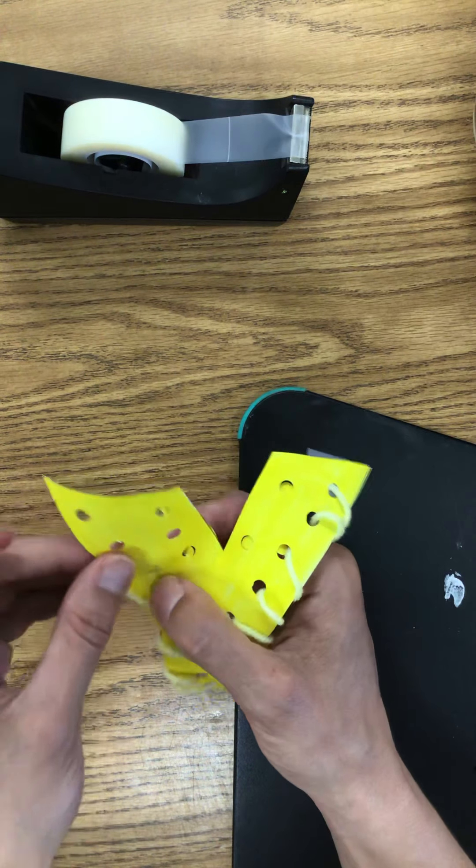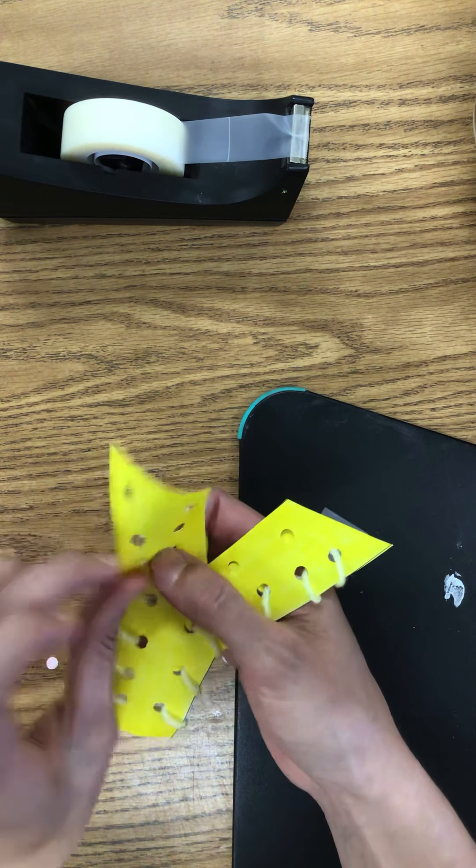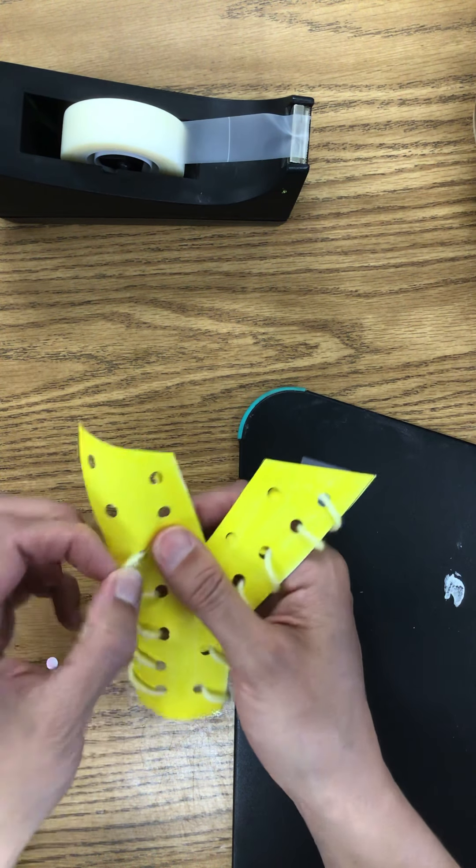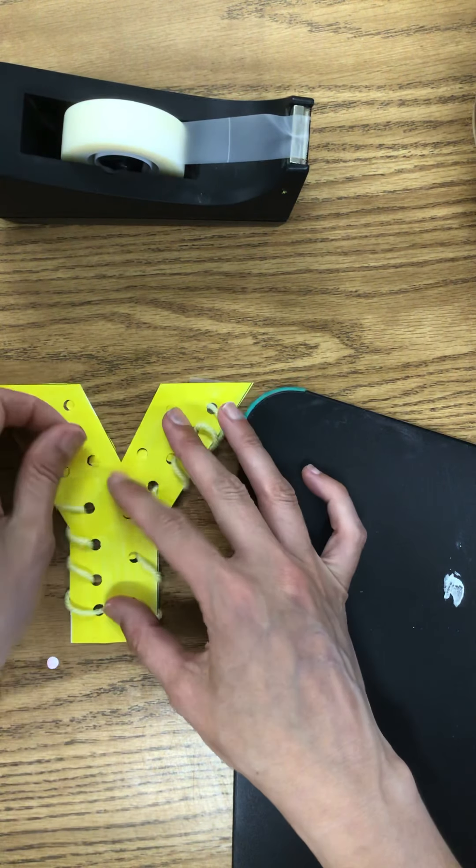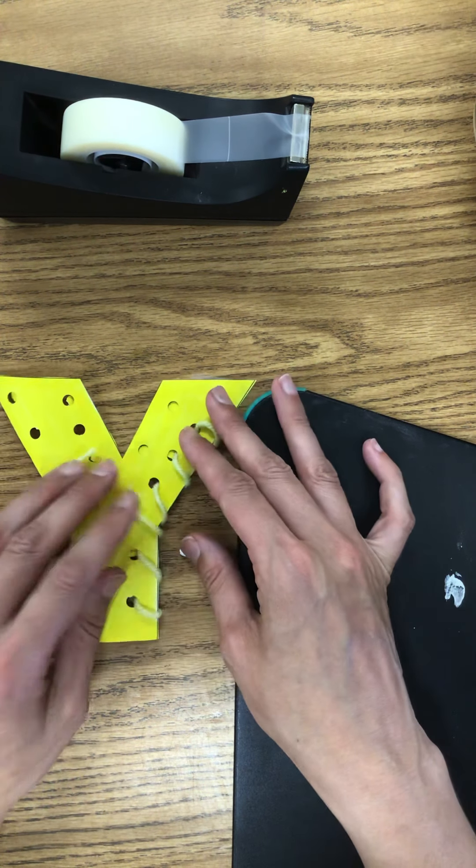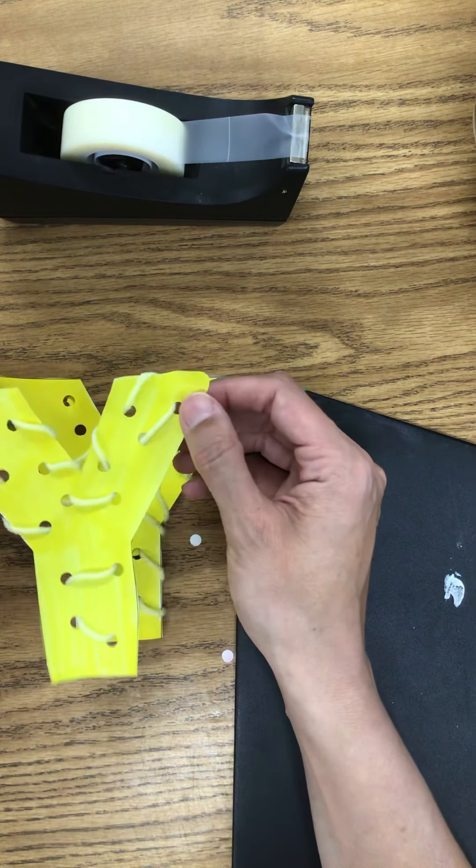And if you have none of those things, I bet you could find your own thing that starts with the letter Y. You could draw a yo-yo. That'd be fun. Alright, so I ran out of string. So I'll probably just grab another piece and keep going here. But I want to show you guys what it can look like when it's all finished.